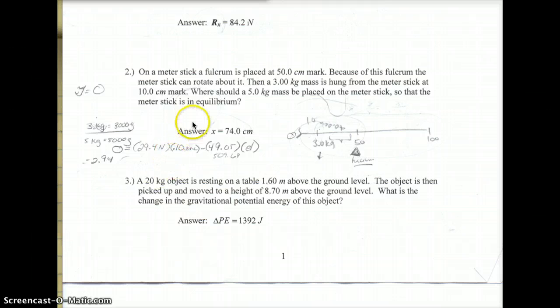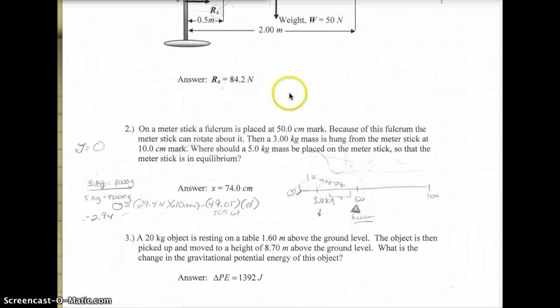We are given on a meter stick a fulcrum is placed at a 50 cm mark. Because of this fulcrum, the meter stick can rotate about it. The 3 kg mass is hung from the meter stick at a 10 cm mark. Where should a 5 kg mass be placed on the meter stick so that the meter stick is in equilibrium?